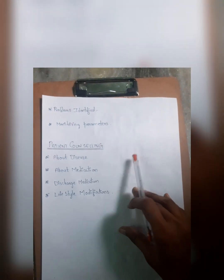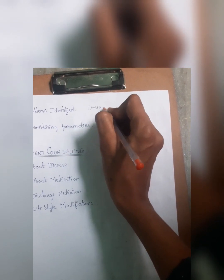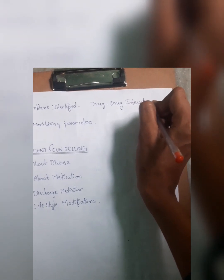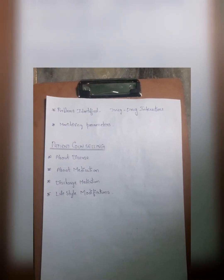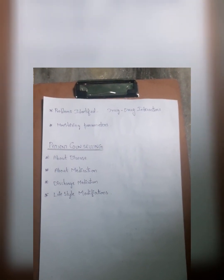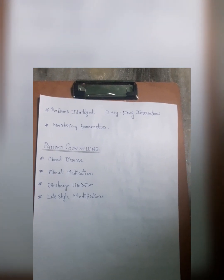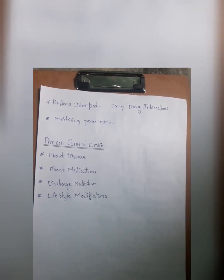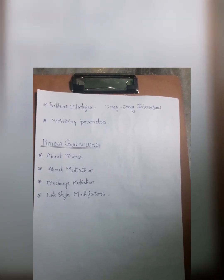Coming to problems identified: problems identified generally include issues like drug-to-drug interactions. If the patient is having high glucose levels and the medication does not include an anti-diabetic drug, then we will write it under problems identified. And if a particular symptom of the patient is not improved, that will also be included under problems identified.